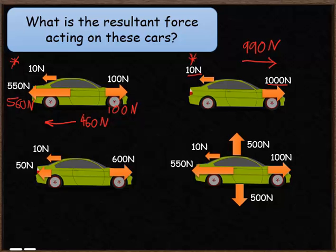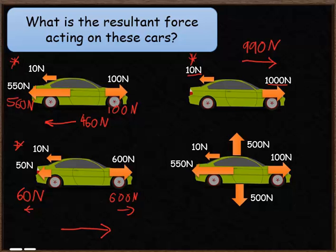The third question is slightly more complicated. We've got two forces in the backwards direction, so we need to add those together — they total 60 newtons going backwards. The forward force is 600 newtons going forwards. The forward force is larger, which tells us the direction. The size of that force will be 600 take away 60, which gives 540 newtons going forwards.